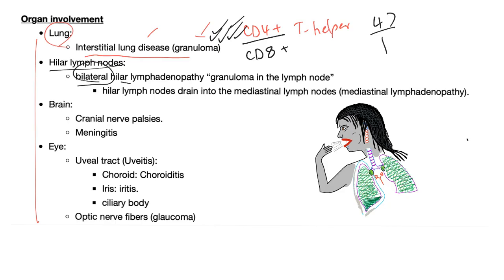There is bilateral hilar lymphadenopathy, and there is non-caseating granuloma in the lymph nodes. These hilar lymph nodes eventually drain into the mediastinal lymph nodes, so you can also see mediastinal lymphadenopathy.